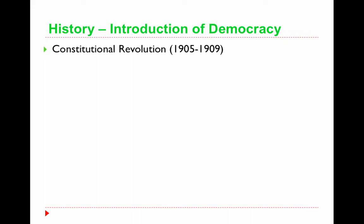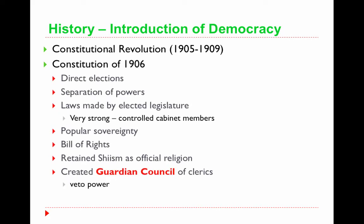We're skipping some early history, but there were two prominent tribes that invaded Iran, ruled it for centuries, and introduced and forced Islam on the people there. The introduction of democracy came from a revolution from 1905 to 1909. The earliest constitution came about in 1906 — it involved direct elections, separation of powers, an elected legislature, popular sovereignty, majority rule, and a bill of rights. It retained Shiism as the official religion, and it created the Guardian Council, which goes all the way back to this original revolution and whose power has only grown over time.